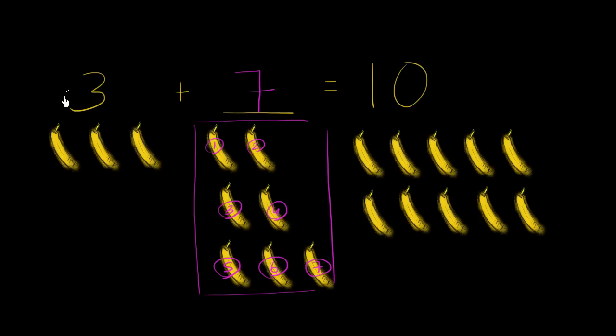And you can see that what we have on this left side is indeed equal to what we have on the right side. On the left side we have one, two, three, four, five, six, seven, eight, nine, ten bananas. And on the right hand side we have one, two, three, four, five, six, seven, eight, nine, ten. So they are indeed equal.